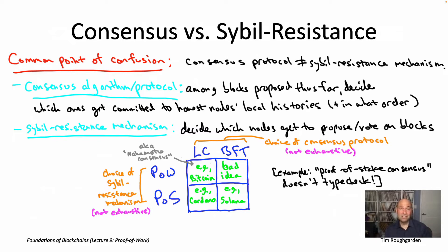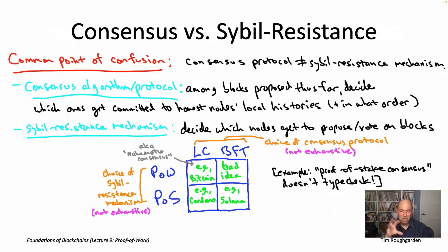I'm not saying that either of these axes is exhaustive. There are definitely consensus protocols that aren't properly classified as either longest chain or BFT type, and there are approaches to civil resistance other than proof of work and proof of stake. But still, a majority of so-called layer-one blockchain protocols can generally fit into one of these four boxes.